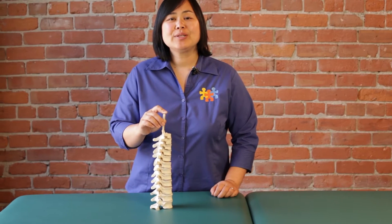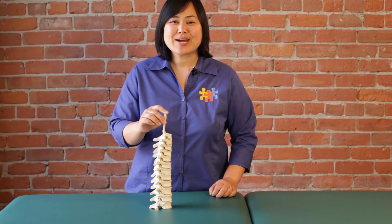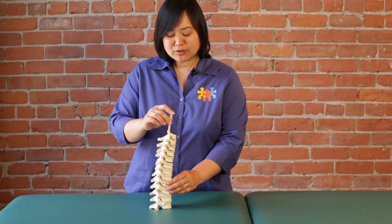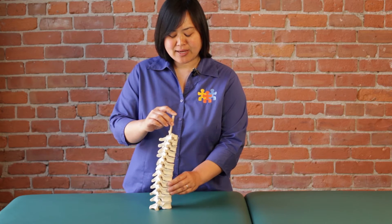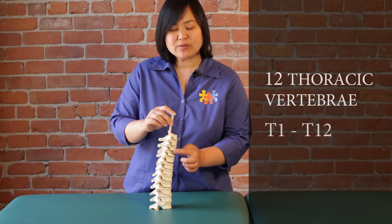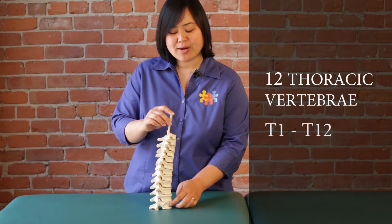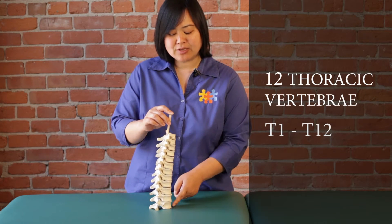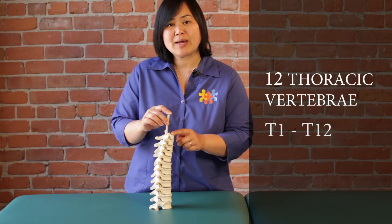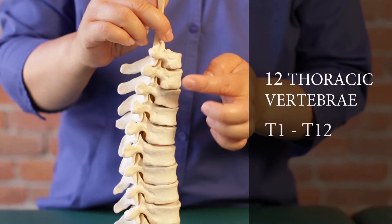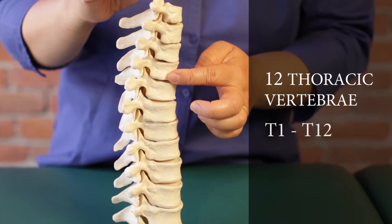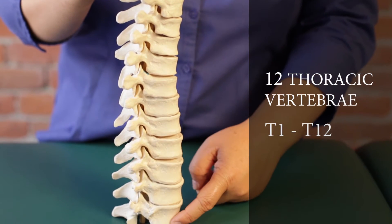This video is all about the unique features of the thoracic spine. When we observe the thoracic spine, we have 12 thoracic vertebrae numbered from superior to inferior just by their numbers — so this would be T1, T2, T3, all the way to T12.